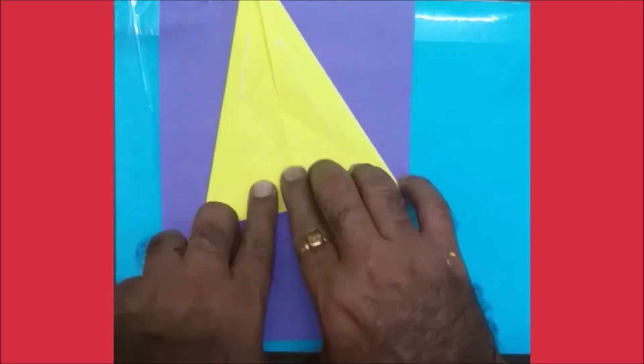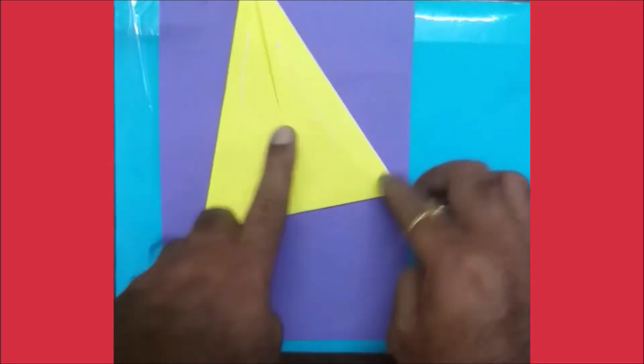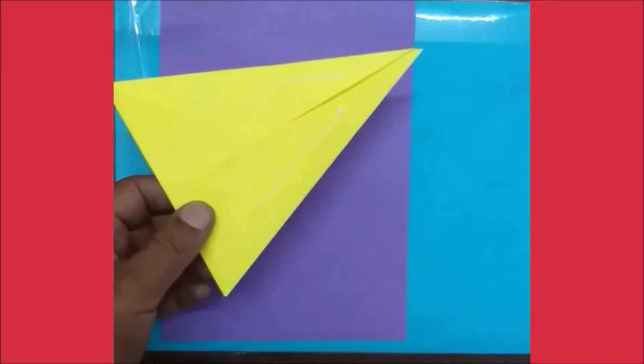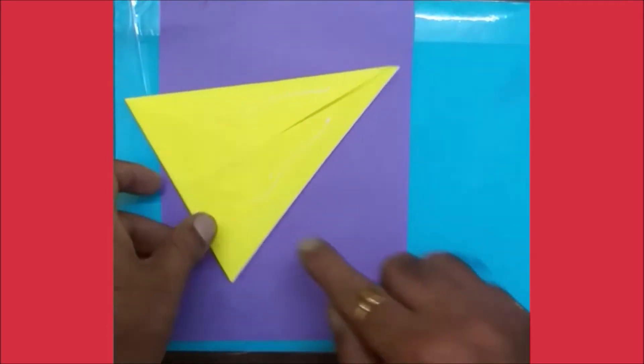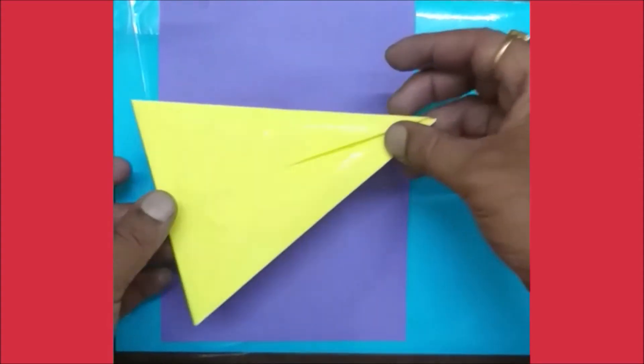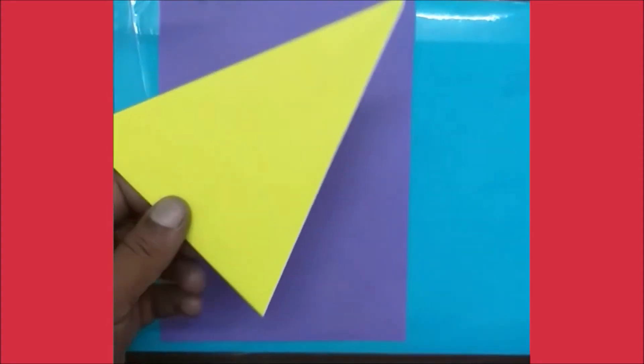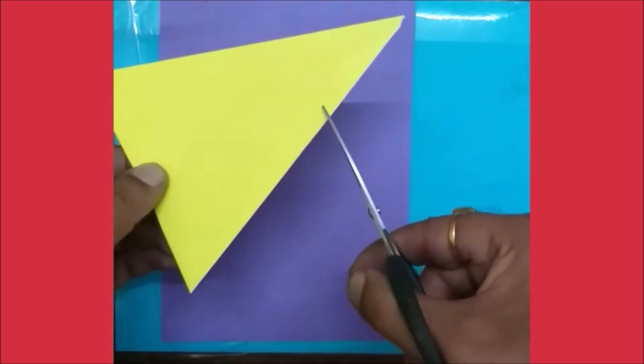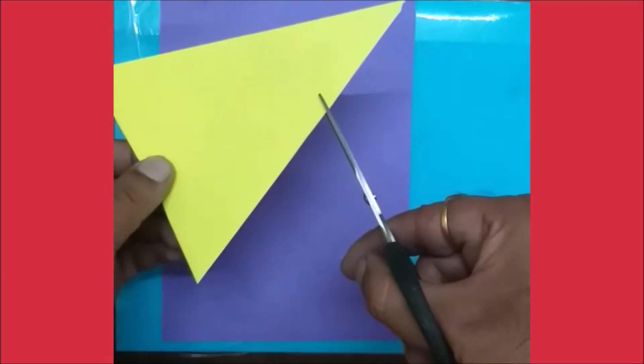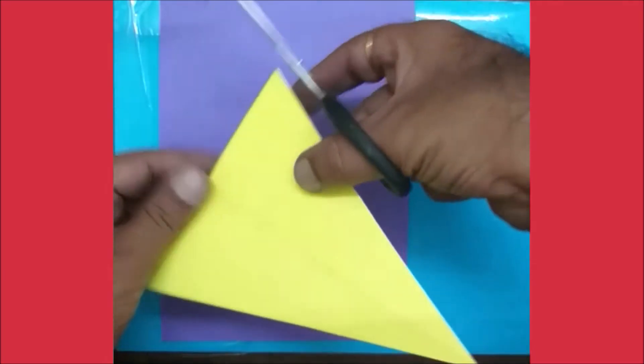Turn it into a triangle. Now you will get a triangle. Now cut it from the corner. It should be cool.